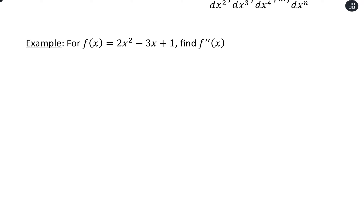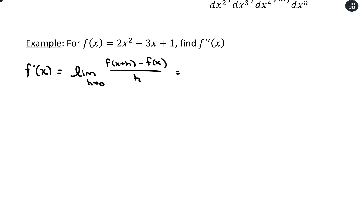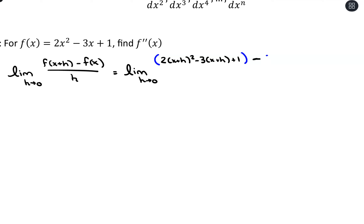Finding the second derivative, we have to start by finding the first derivative. We evaluate the first derivative, which is our limit as h approaches 0 of f(x+h) minus f(x) all over h. For our first function output, we'll have 2 times (x+h) squared minus 3 times (x+h) plus 1, minus our function f(x), which is 2x squared minus 3x plus 1, all over h.